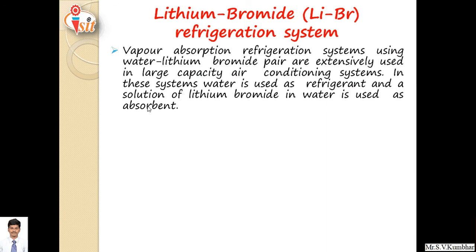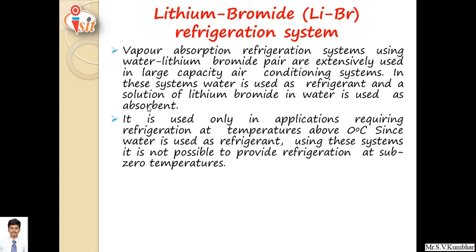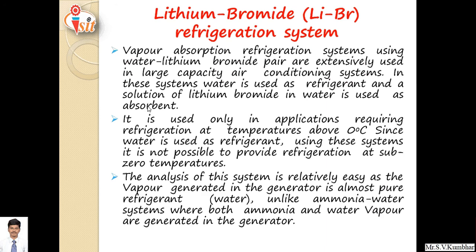Vapor absorption refrigeration systems using a water-lithium bromide pair are extensively used in large capacity air conditioning systems. In these systems, water is used as refrigerant and a solution of lithium bromide in water is used as absorbent. This system is used only in applications requiring refrigeration at temperatures above zero degrees centigrade, since water is used as refrigerant — it is not possible to provide refrigeration at sub-zero temperatures. The analysis of this system is relatively easy as the vapor generated in the generator is almost pure water, unlike the ammonia-water system where both ammonia and water vapors are generated.